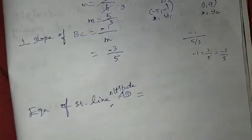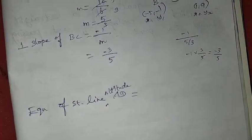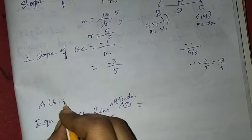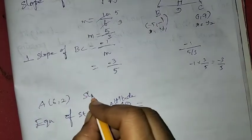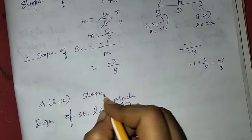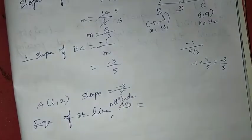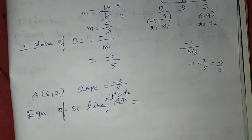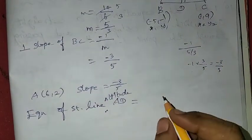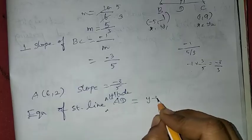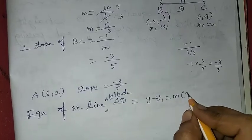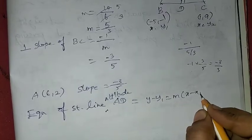Now we have found the median. For the altitude, using the A point and slope, we apply the point-slope form. The formula is: y minus y1 is equal to m into x minus x1.